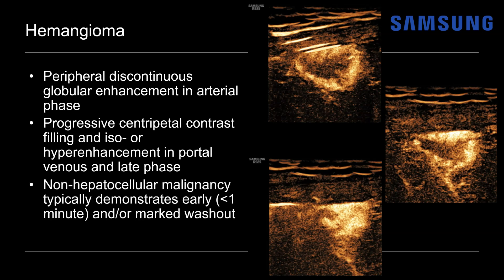Compare that to a non-hepatocellular malignancy like a metastasis, which typically demonstrates early — meaning less than one minute — and/or marked washout, based on the LI-RADS 2017 ACR contrast ultrasound core document. A hepatocellular malignancy like HCC will demonstrate late and only mild washout, tending to wash out after a minute. Note that hemangioma's contrast-enhanced appearance is similar to the CT and MRI enhancement pattern because this is a primarily vascular tumor and the ultrasound contrast agent is a purely intravascular agent.